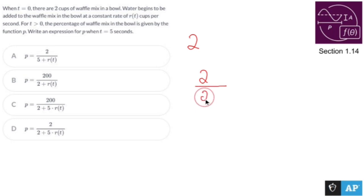Now what we're going to do is we're going to add a certain amount of water to the mix. If I were to add half a cup, I would have 2 plus a half. Now I don't know how much I'm adding. All I know is that I'm adding for five seconds and I'm adding at a rate of r, so it's going to be 2 over 5 times r.